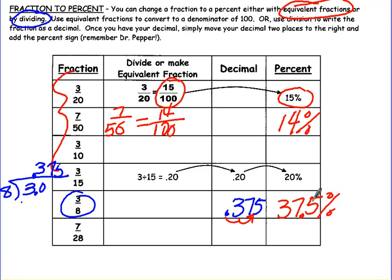Some fractions you can reduce first, and then change to a percent. One-fourth is a memory one. You should know that that's 0.25 and 25%. You could also use equivalent fractions or division if you didn't remember.